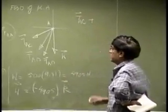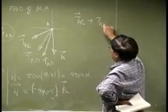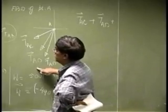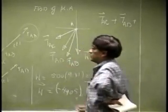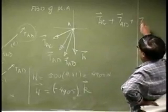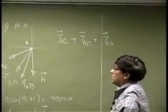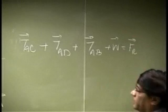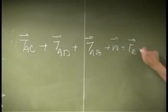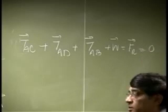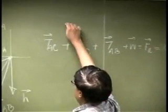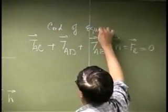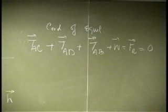You have the vector force TAC, then you have the vector force TAD, then you have TAB plus the weight. That adds up to the resultant force, and the resultant is zero because point A is in equilibrium. So this is what we call the condition of equilibrium for this given problem.